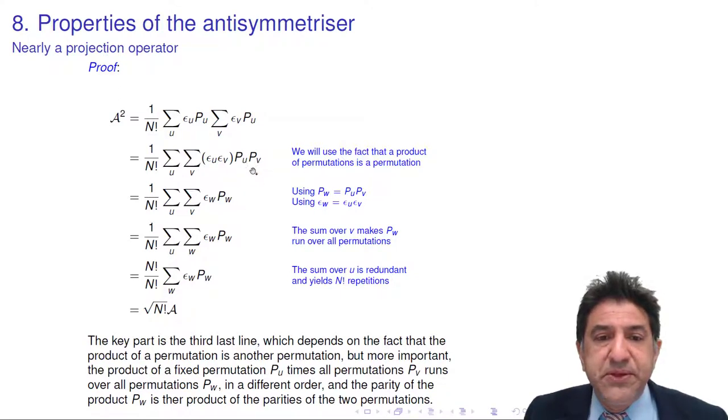So, in other words, pu times pv, which is pw, running over all permutations v is the same as doing all permutations. So I'm going to call that pw.